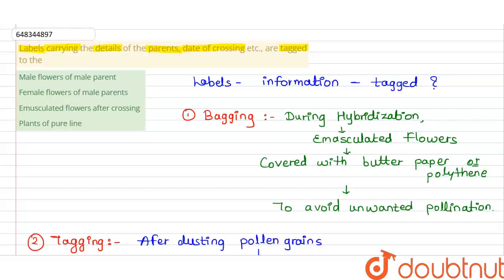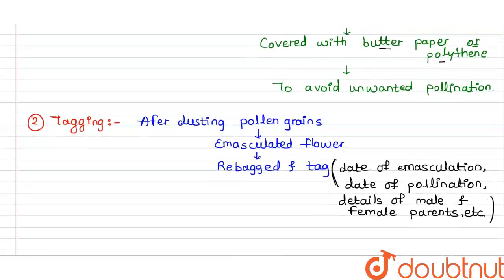At the time of hybridization, there is an emasculated flower chosen for the process. The female part of that flower is covered with a butter paper bag or polythene bag to avoid unwanted pollination. This process is called bagging, because we are using a bag to prevent unwanted pollen grains from causing pollination.